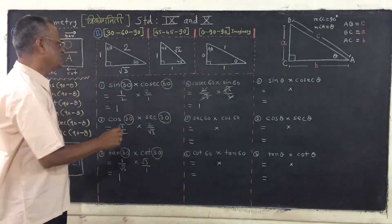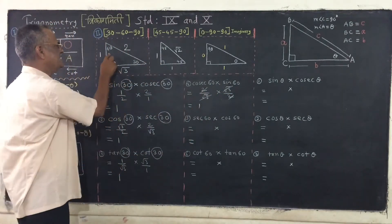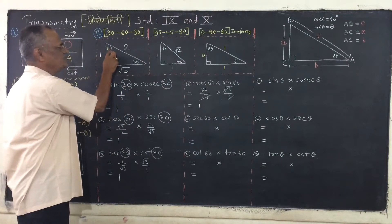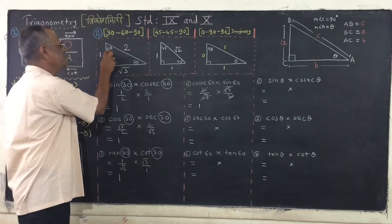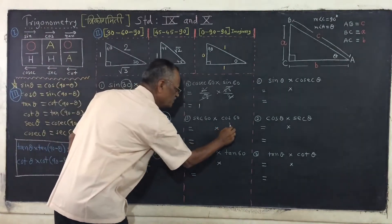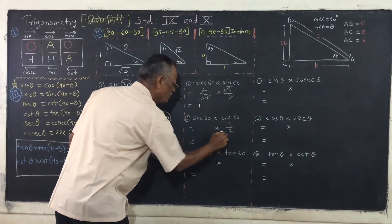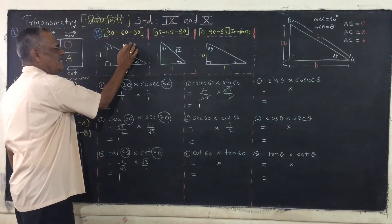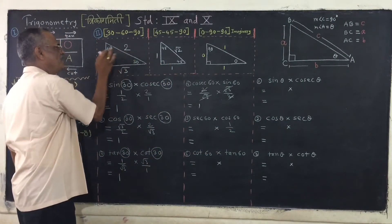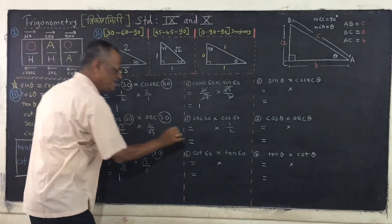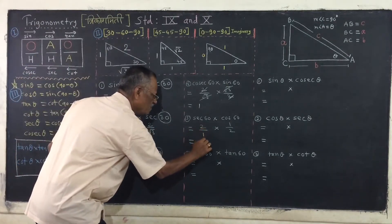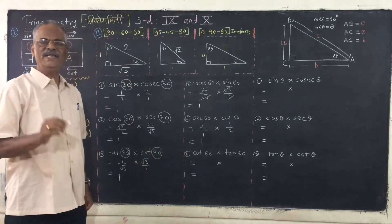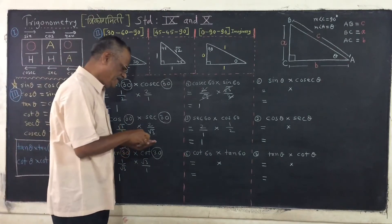Similarly, sec 60 and cos 60. Cos 60, you know that cos 60 is 1 upon 2. Sec 60 is hypotenuse upon adjacent, that is 2 upon 1, and product is 1. Very interesting point you are finding.